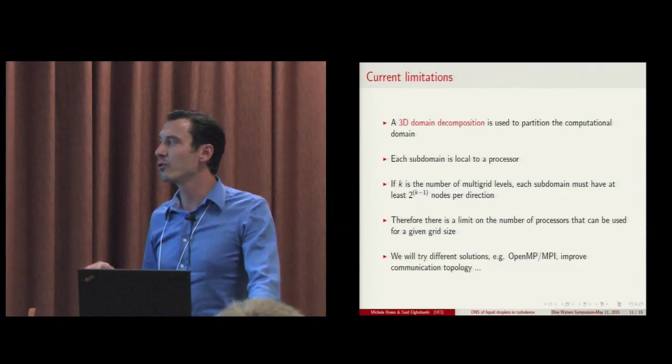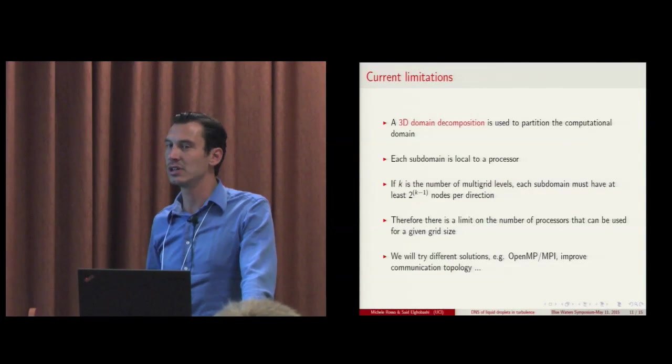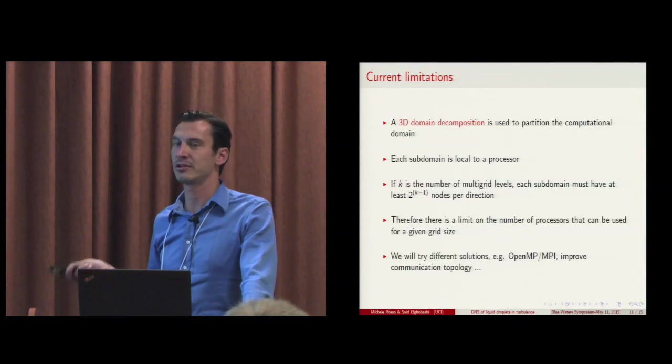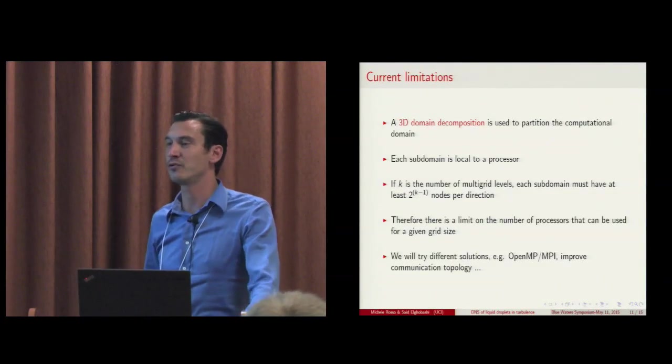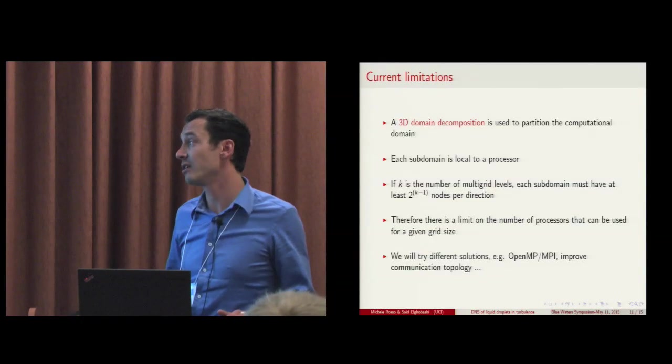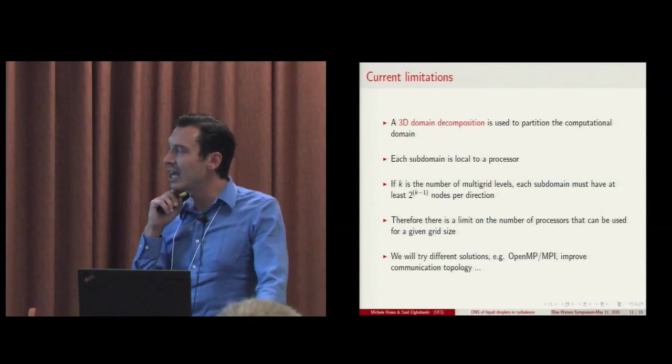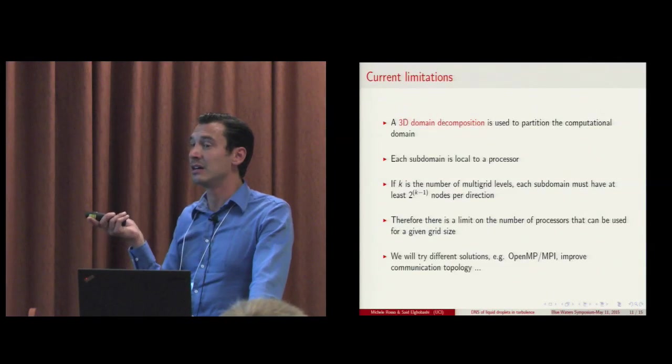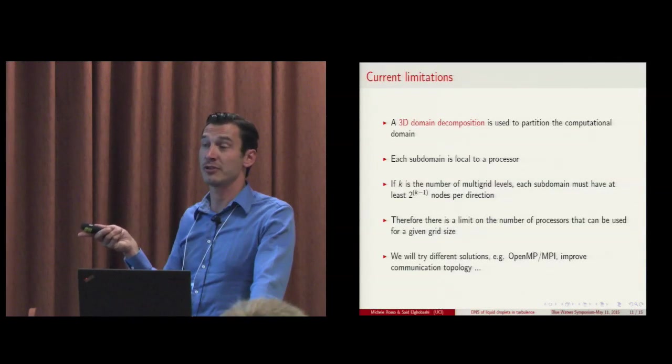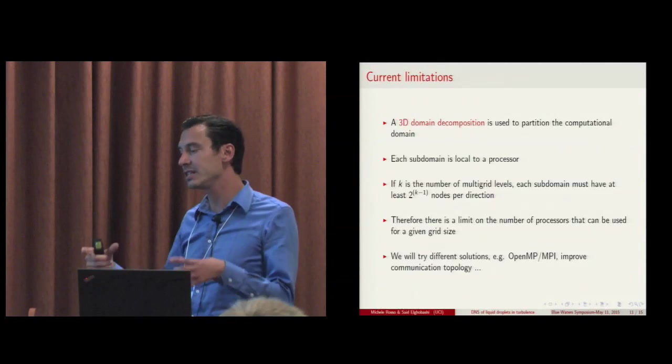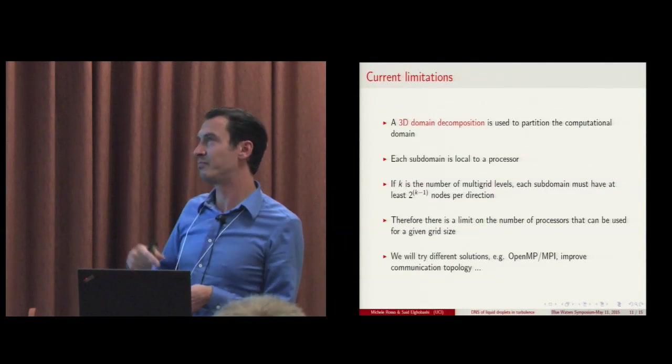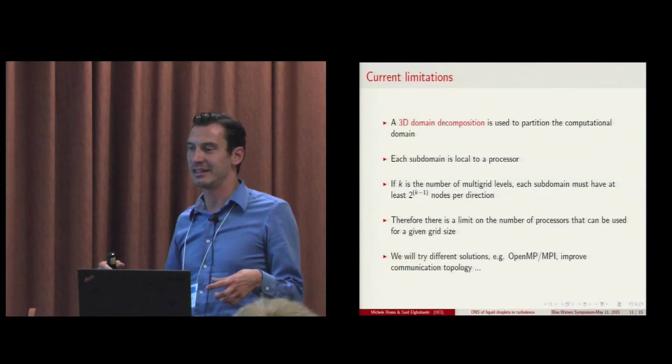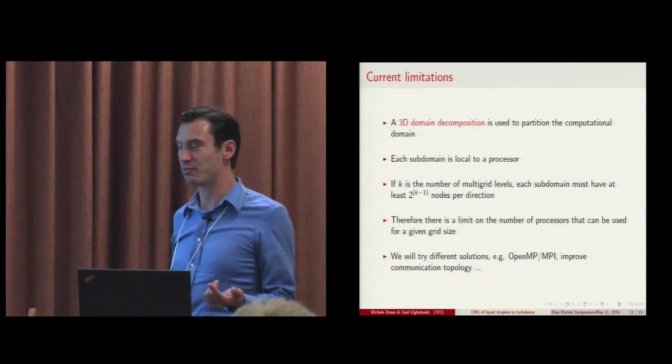So currently we are looking into ways to improve this. One is improving the communication topology, so speeding up the calculation for the same amount of processors. But actually, we would also like to experiment with OpenMP and MPI, particularly for the solution of the Poisson equation, such a way that on a single node we can use pretty much all the levels of multigrid we want without requiring exchange of information between processors.